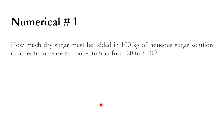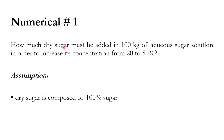Numerical number one: how much dry sugar must be added to 100 kg of an aqueous sugar solution in order to increase its concentration from 20% to 50%? The inlet concentration is 20%, the outlet concentration is 50%, and the aqueous sugar solution mass is 100 kg. We assume dry sugar is composed of 100% sugar with no impurity.